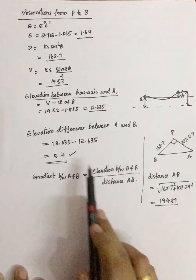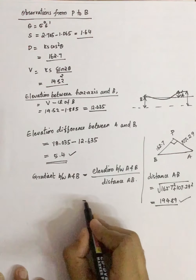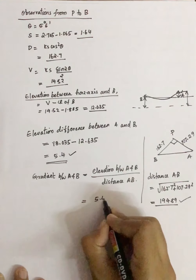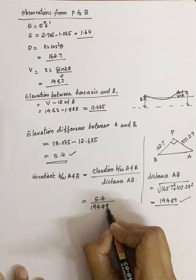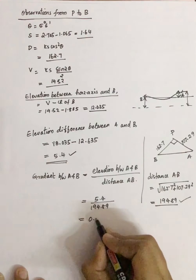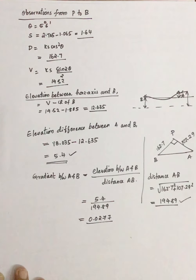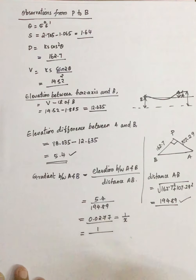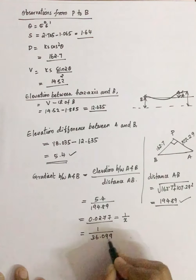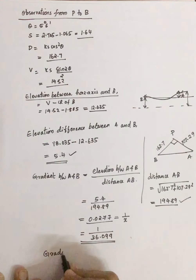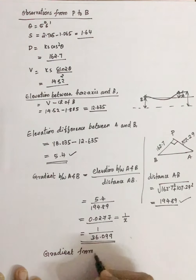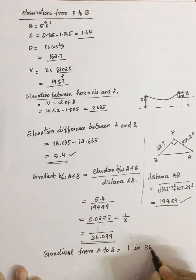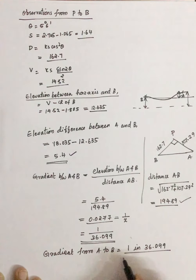You got the elevation between A and B, and you got the distance AB. Substituting these two values: 5.4 divided by 194.89 gives 0.0277. We represent the gradient as 1 in X, so you get 1 in 36.099. The answer is: gradient from A to B is equal to 1 in 36.099.